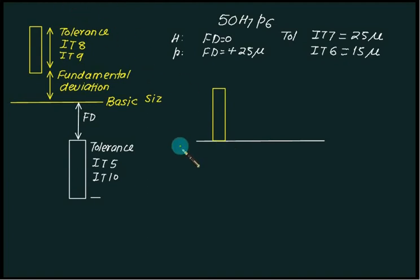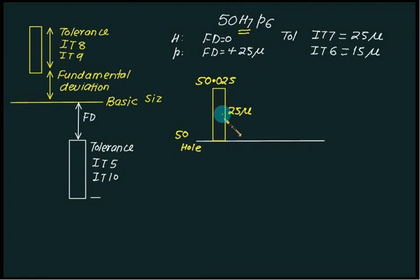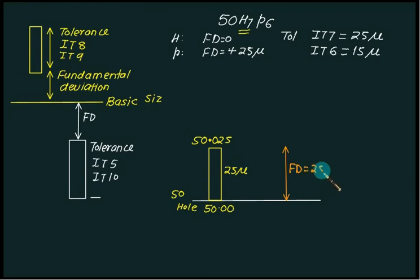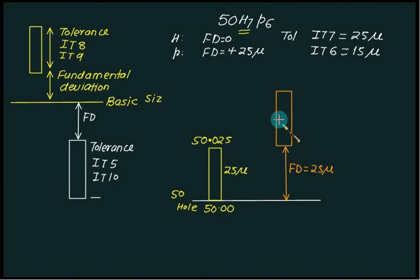The tolerance for hole IT7 is 25 microns. So the maximum size of the hole is 50 plus 25 microns equals 50.025 mm, and the minimum size is 50 mm. The fundamental deviation for the shaft is positive 25 microns, exactly equal to the tolerance of the hole. Above this we mark the tolerance for the shaft, which is IT6 equal to 15 microns, represented as a rectangle of 15 microns.